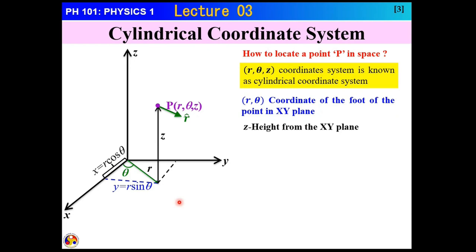The unit vector is along the increasing direction of r, which is the distance from the z-axis to the point. The unit vector theta is in the increasing direction of the angle theta. The unit vector z is in the increasing direction of the z direction.